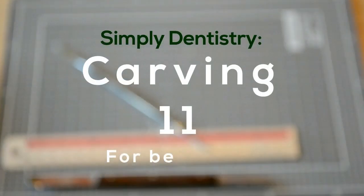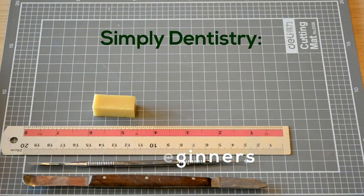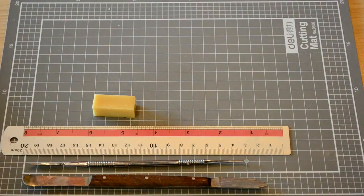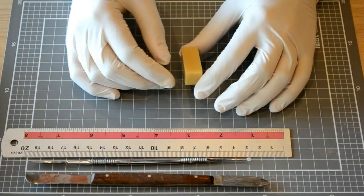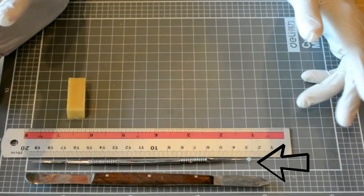Hi and welcome to single tooth carving for beginners. In this video we'll be teaching you a basic carving method for the maxillary central incisor with some useful tips and tricks for carving. What you'll need is a wax block, a lecron carver, a wax knife, and a ruler.